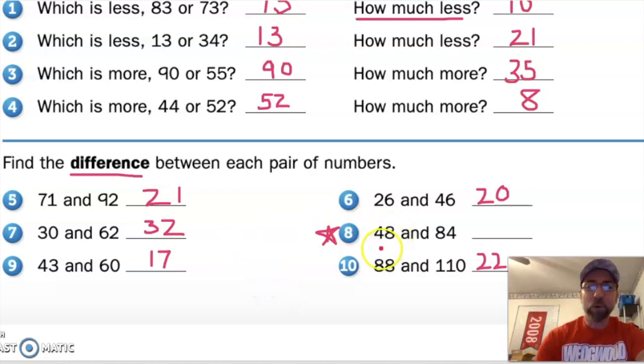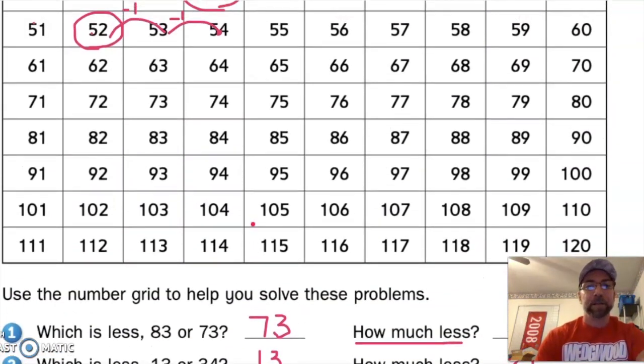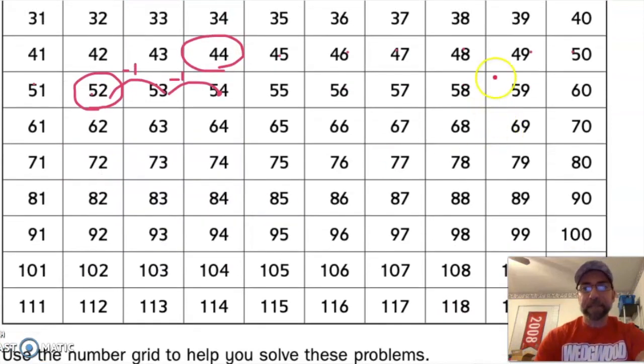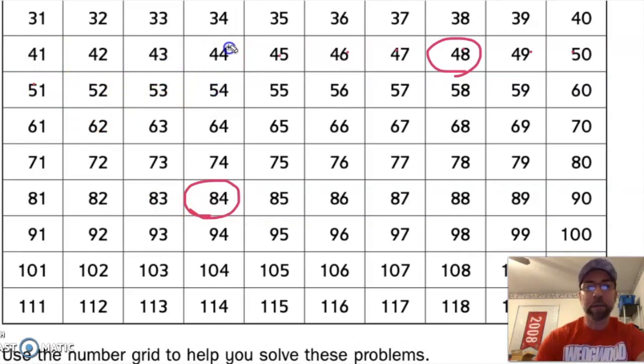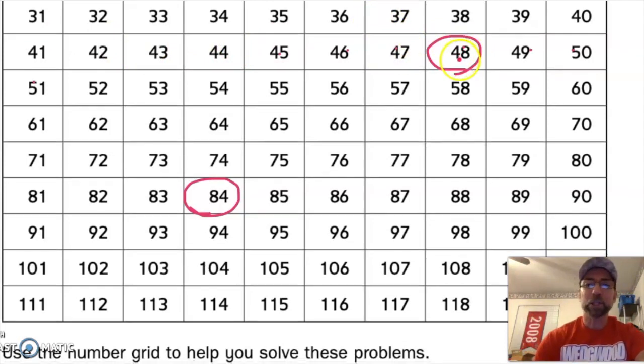Number 8 is 48 and 84. 48 is here and 84 is here. And the reason that I wanted to do that is because it's a tricky one because it might involve counting backwards, depending how you do it. So let's try it. 10, 20, 30, 40, and now I have to count backwards. 39, 38, 37, 36.